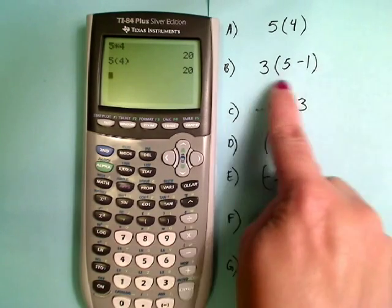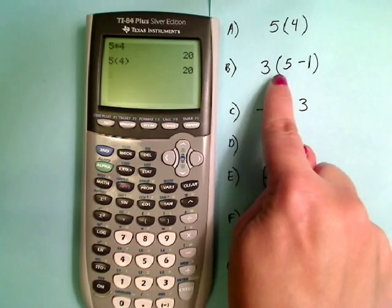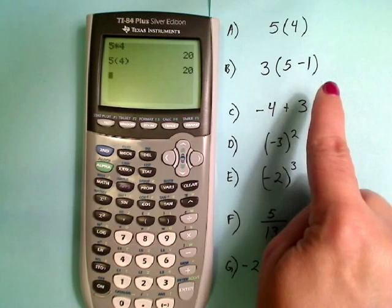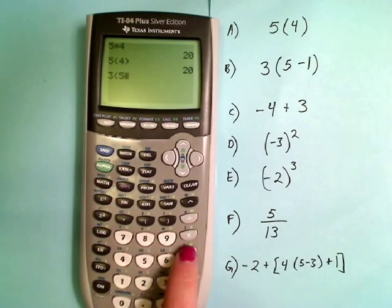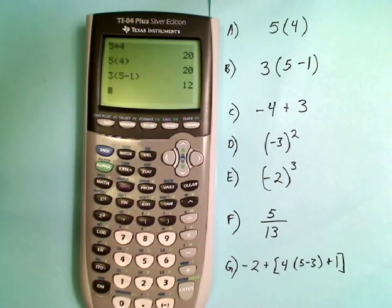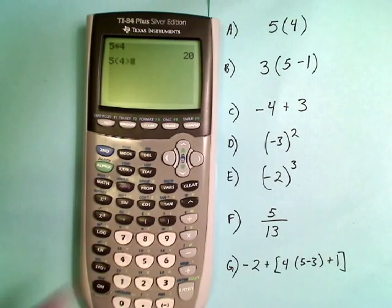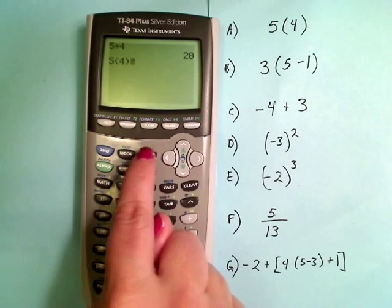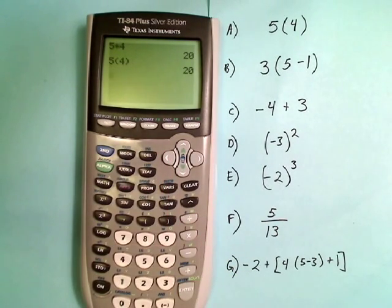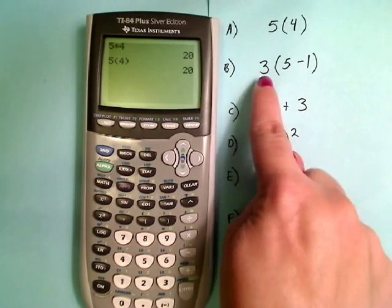So the calculators also can use parentheses to do multiplication, just like I wrote it here. So 5, I can use this open paren here, 4, close paren. There we are. Press enter. Oops. Delete is also a good button. Press enter, we get 20.